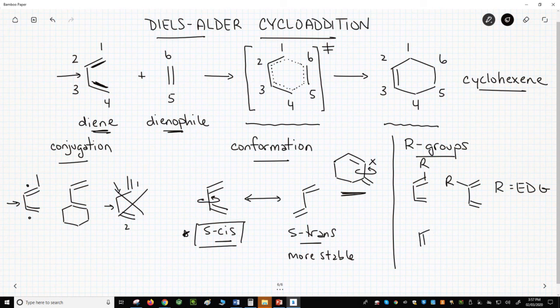The dienophile normally has electron-withdrawing groups, so most dienophiles are electron-poor. The electronic difference between the diene and dienophile help them react more quickly.